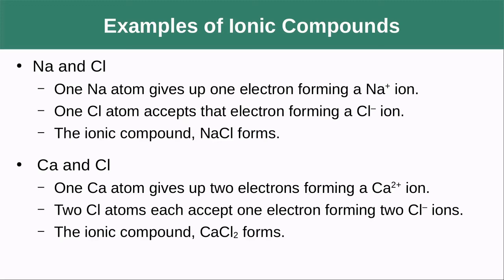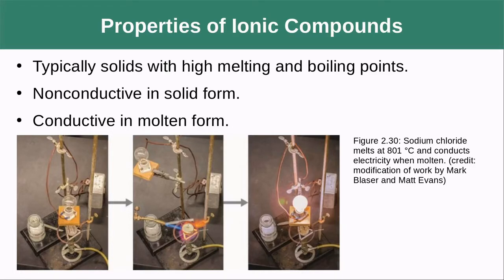We can do the same thing with calcium, which gives up two electrons, so we need two chlorine atoms to accept one electron each, giving us calcium chloride, CaCl2. Properties of ionic compounds: they're typically solids with high melting and boiling points. They're not conductive as solids, but when melted and the ions are freed, they can conduct electricity. Some of the very first fuel cells were based on molten salts.